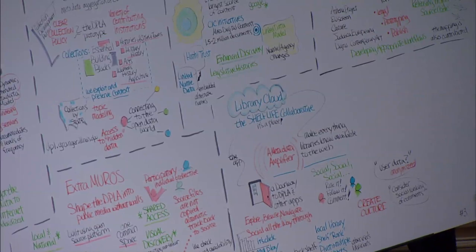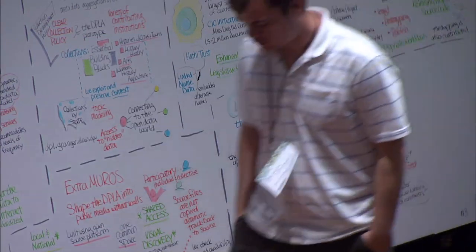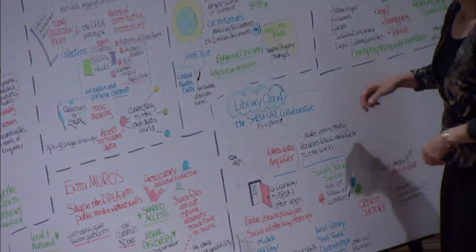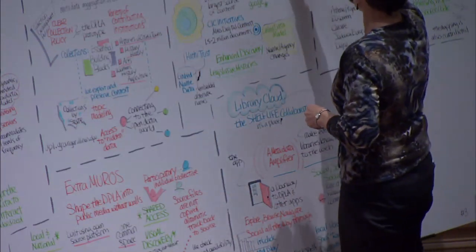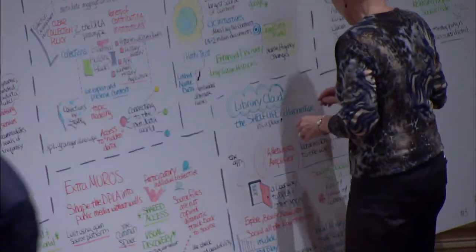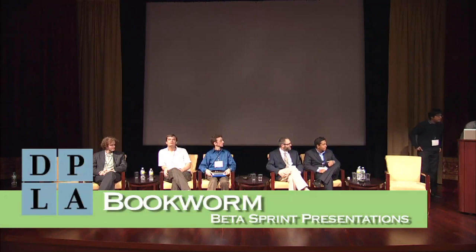We're going to go Bookworm, then the Collection Achievements and Profile System, and SJU are last. So the first of the lightnings is called Bookworm, Ben Schmidt and Martin Camacho. Thank you so much for being here.